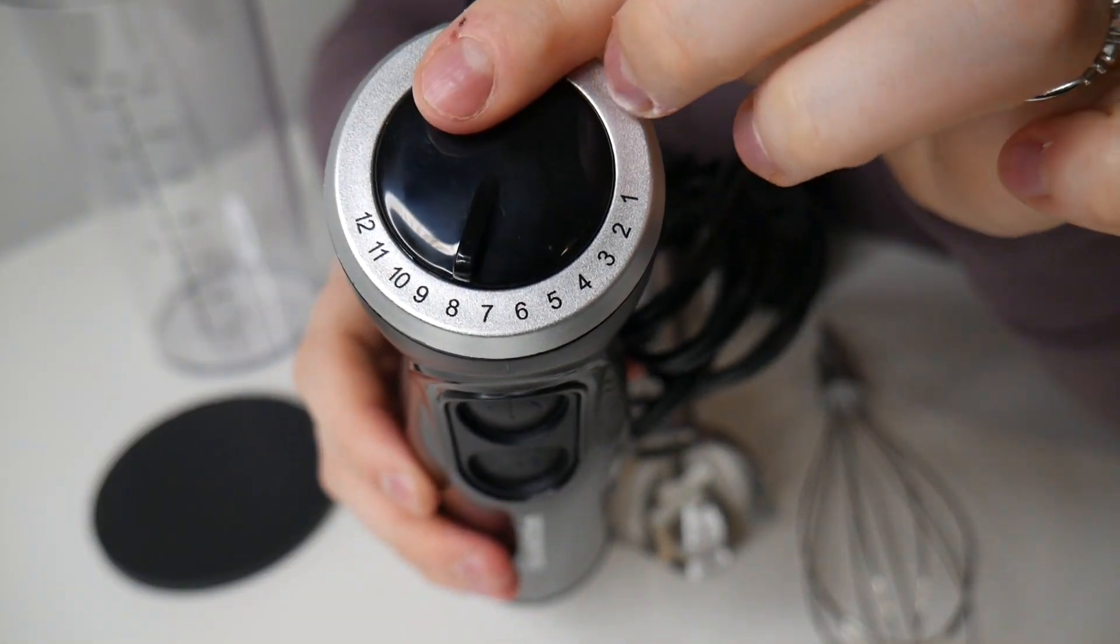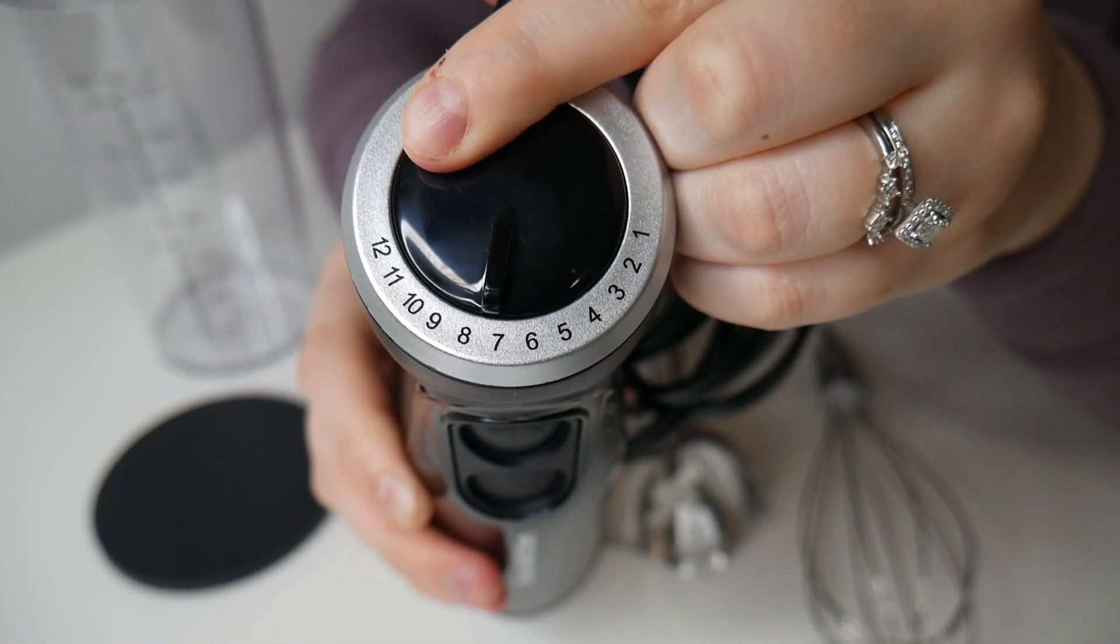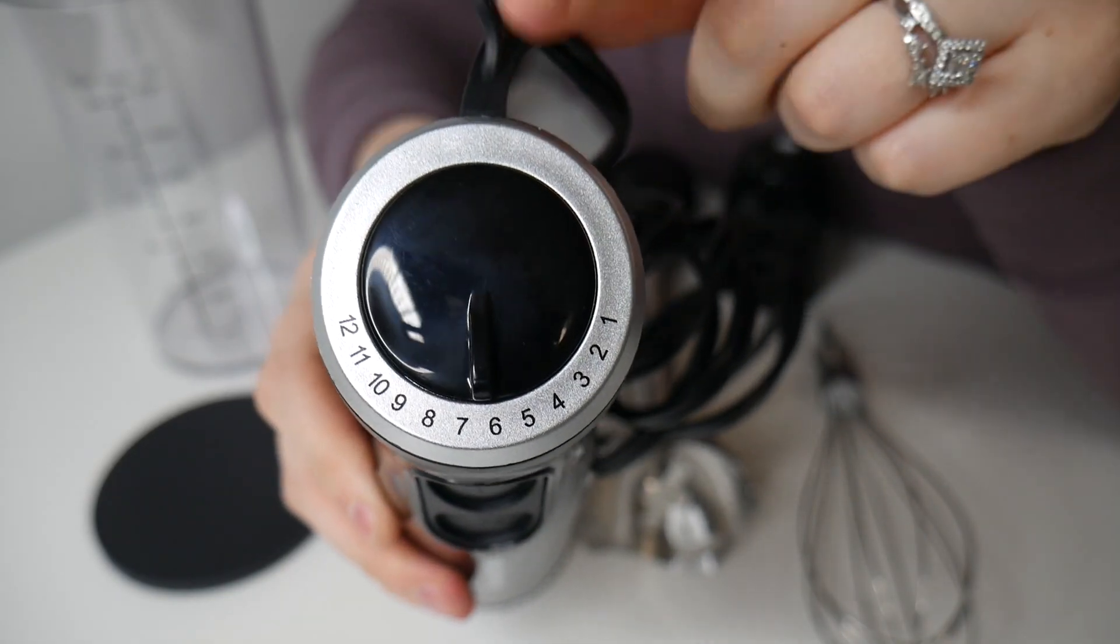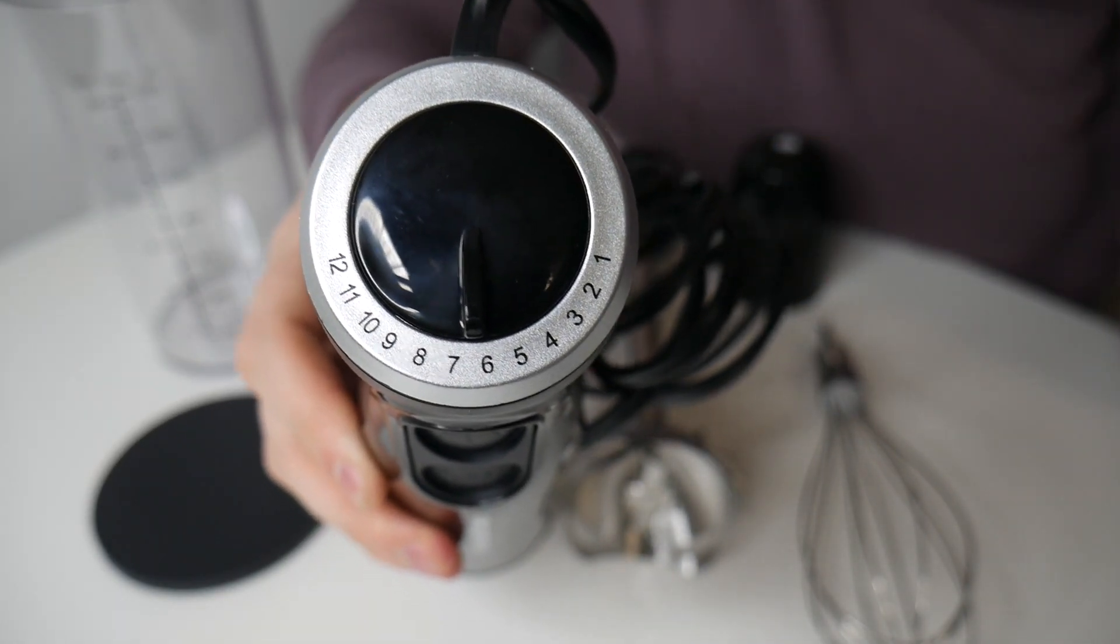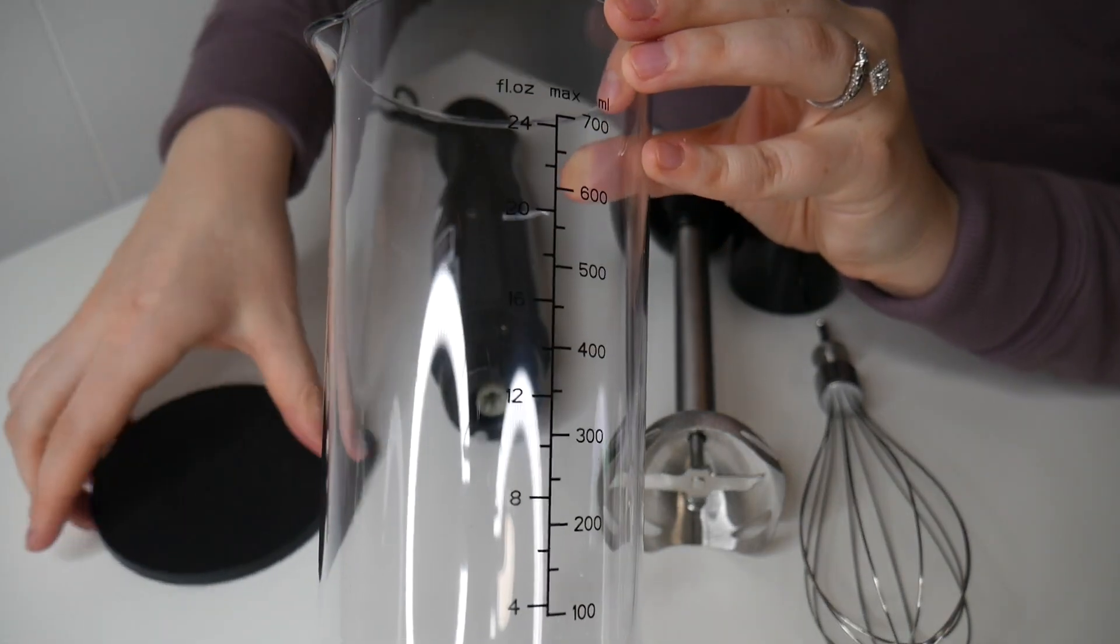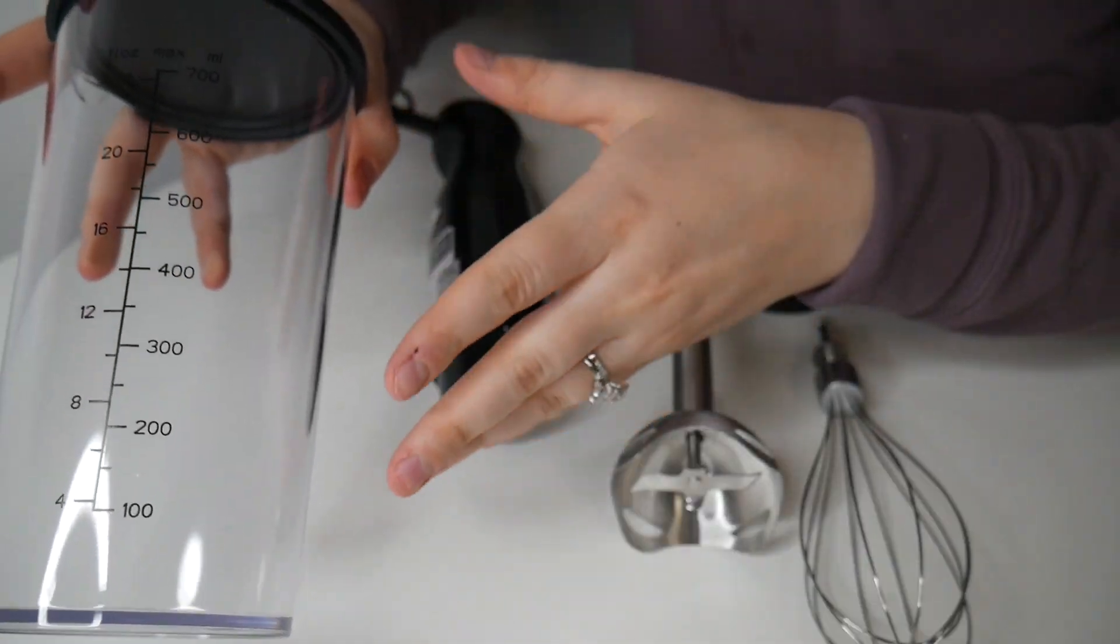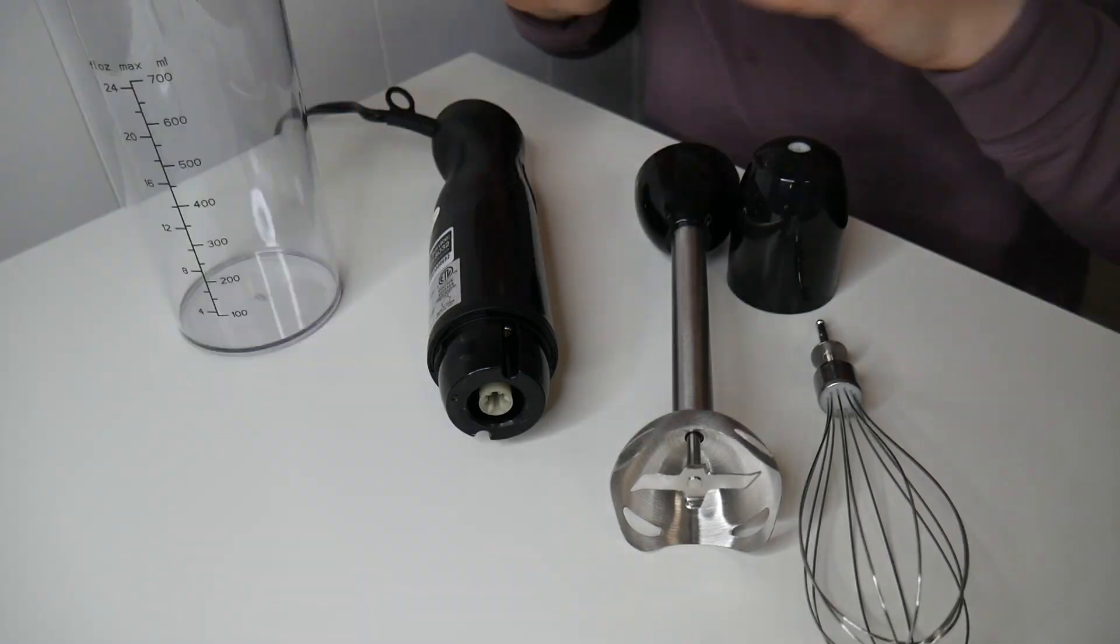On the top there is a dial with 12 different adjustable speed settings, so you can really see how versatile this is going to be in the kitchen. This also came with a 24-ounce beaker as well as a silicone lid, which will be really nice to have on hand.